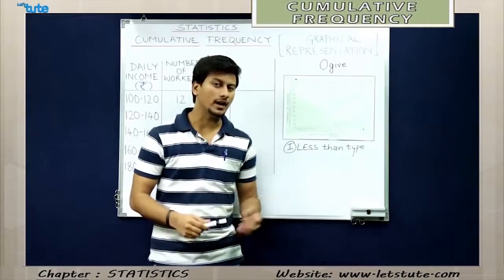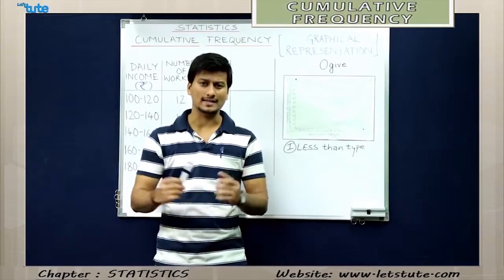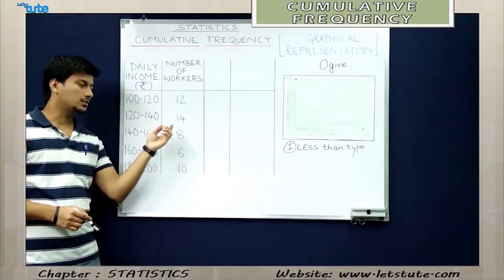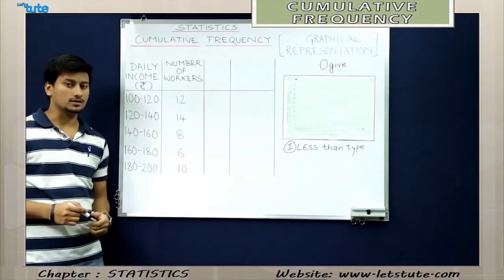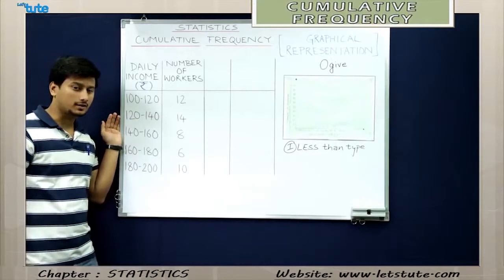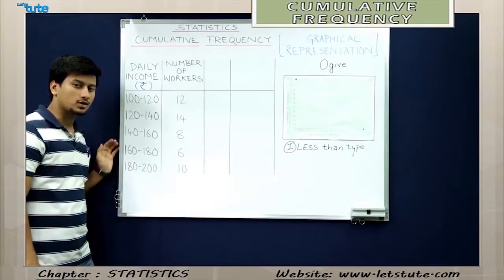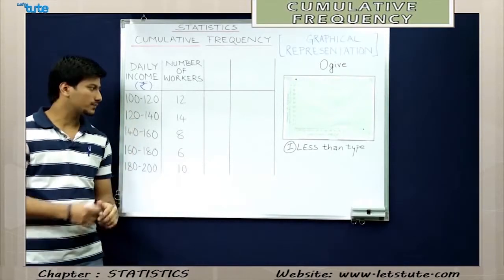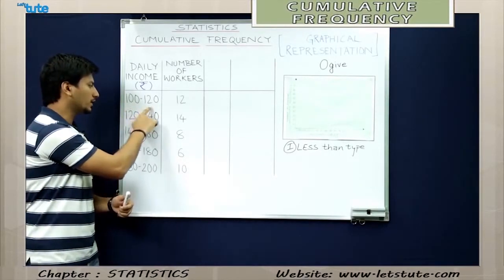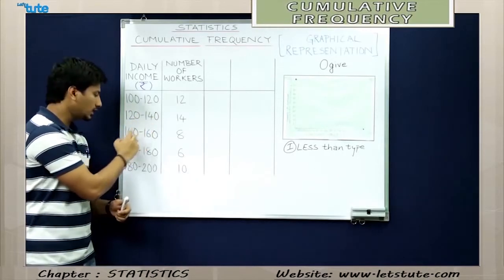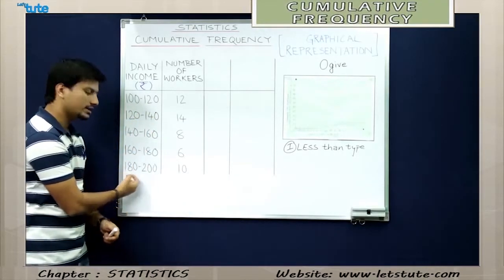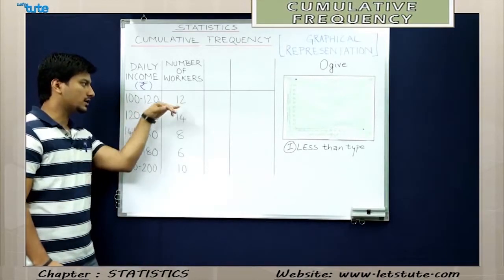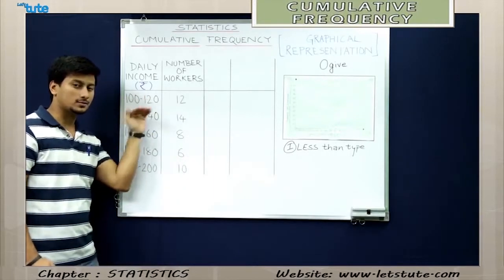Before I tell you why the name 'less than type,' let's start with an example. I have an example of daily income of some workers in terms of Indian rupees. This data is grouped data because it is divided into small groups. Every group has a class size of 20, so there is a difference of 20 rupees: 100 to 120, 120 to 140, 140 to 160, 160 to 180, and 180 to 200. This income group also shows the number of workers that fall in the corresponding category.